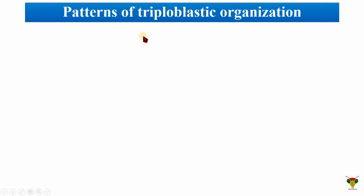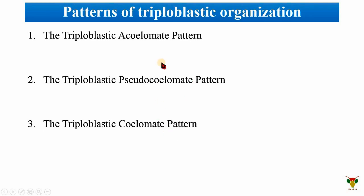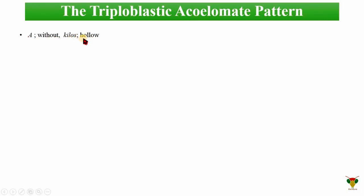Now we have the concept of a coelom and can discuss the patterns of triploblastic organization. The first pattern is the acoelomate pattern, second is the pseudocoelomate pattern, and third is the coelomate pattern. Looking at the meaning of the word 'acoelomate': 'a' means without, and 'koilos' means hollow — without hollow — meaning without a body cavity or without a coelom.